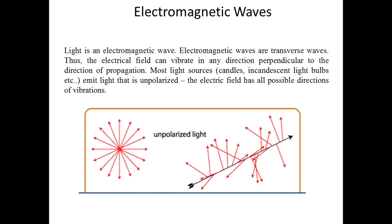Most light sources such as candles and light bulbs emit light that is unpolarized, and the electric field has all possible directions to vibrate.